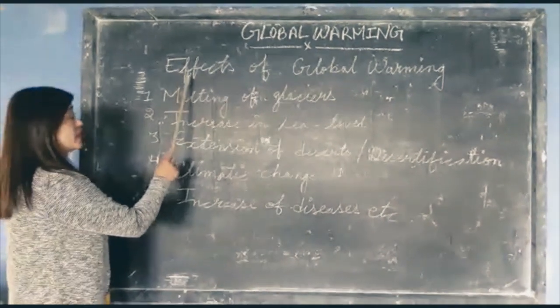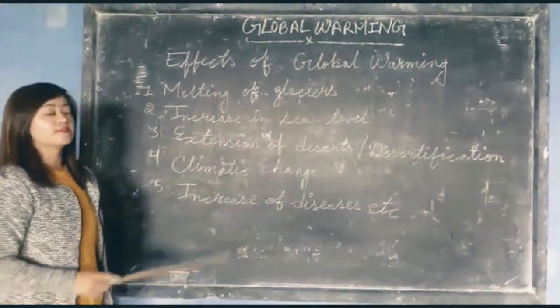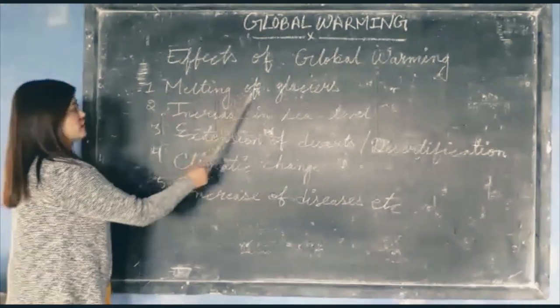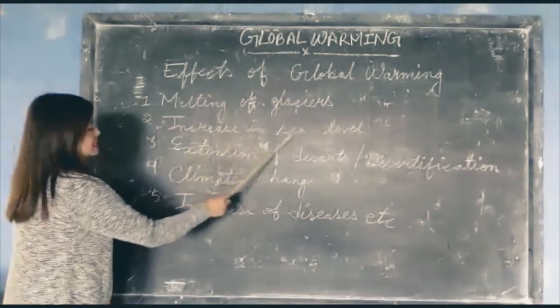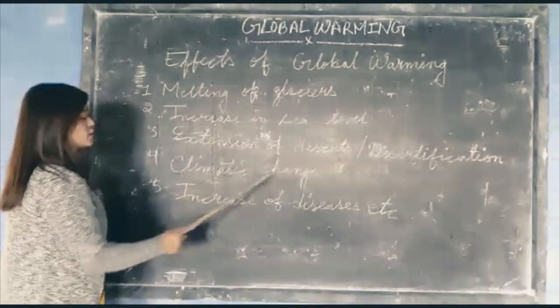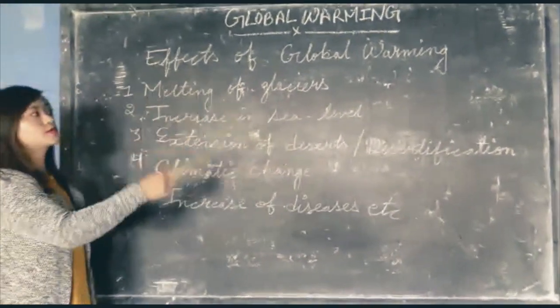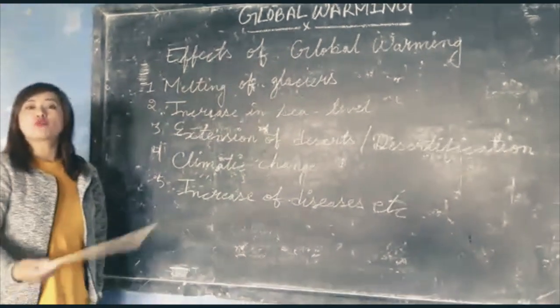Now I am explaining the effects of global warming. There are many effects like melting of glaciers, increasing sea level, extension of deserts or desertification, climate change, increase of diseases, etc. These are some of the effects of global warming.